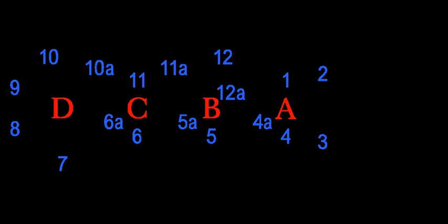Tetracyclines are a group of broad-spectrum antibiotic compounds that have a common basic structure and are either isolated directly from several species of Streptomyces bacteria or produced semi-synthetically from those isolated compounds.